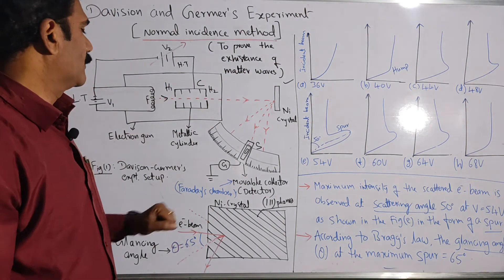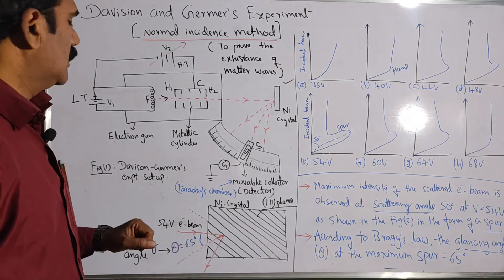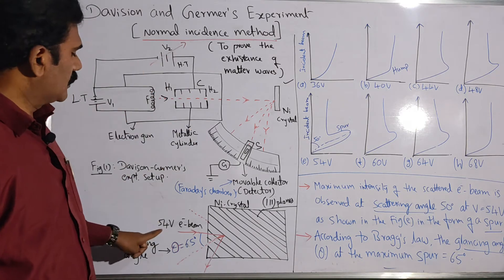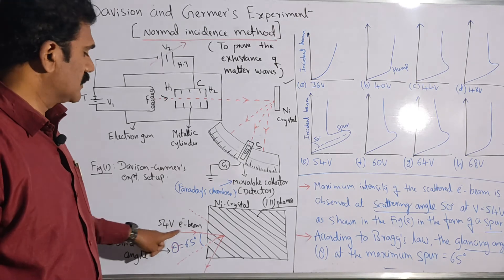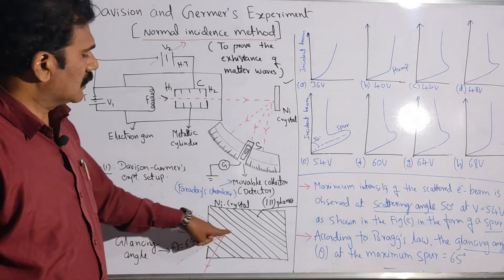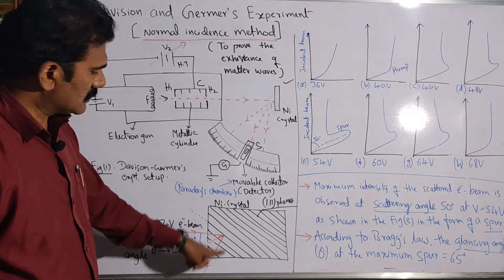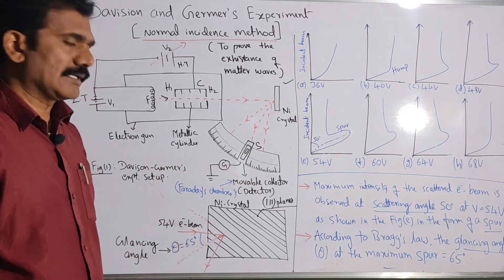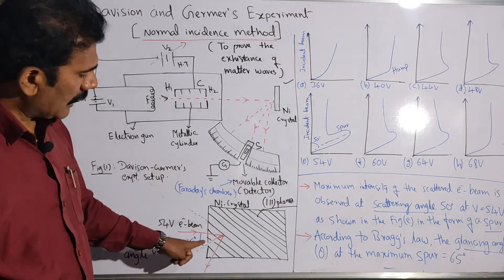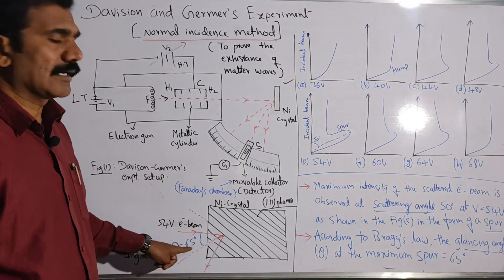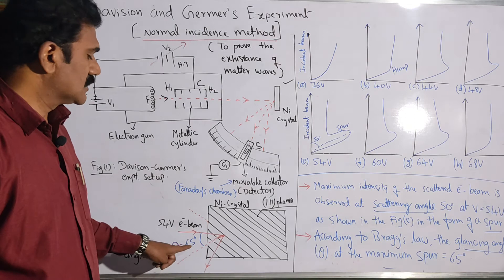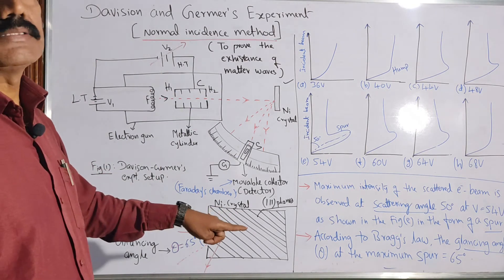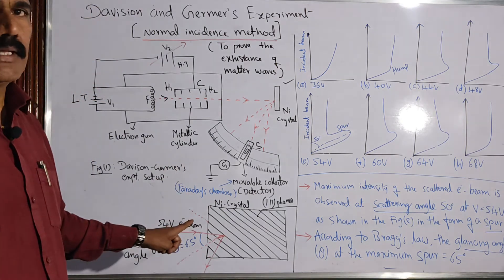At what particular angle we have the maximum intensity — that is what we actually have to identify using the detector by moving it to various positions. For various scattered angles, we are able to collect the scattered electron beam using this movable collector. It is found that particularly when the applied potential is 54 volts, the reflected electron beam will have maximum intensity. The corresponding angle is called the glancing angle. The glancing angle is around 65 degrees, but the scattering angle is around 50 degrees.